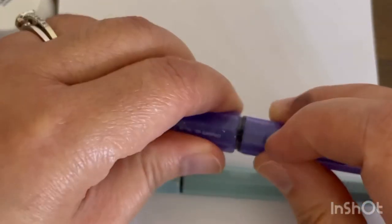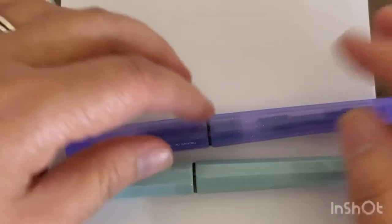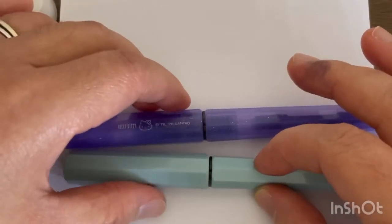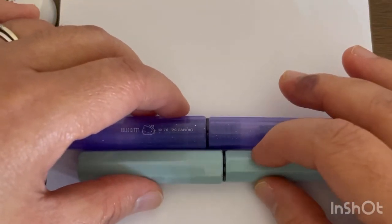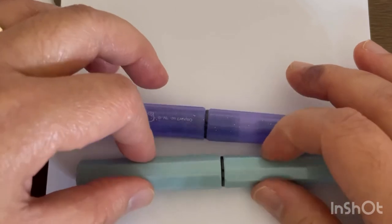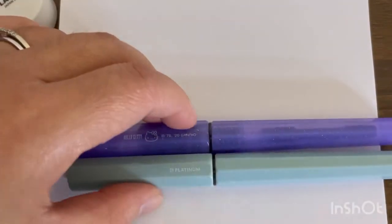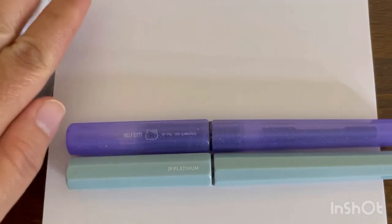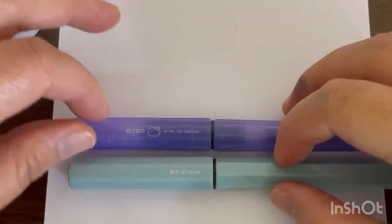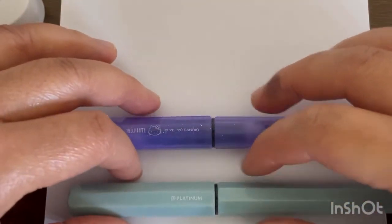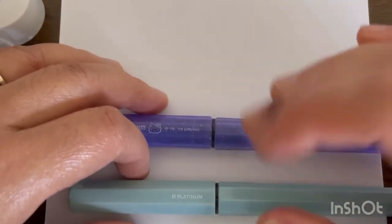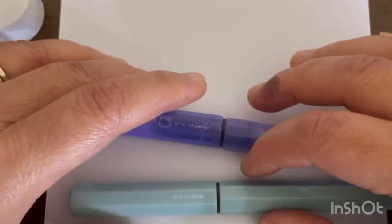I think the Meteor pens only come in fine nibs, and you know how Japanese nibs are. When you say fine, that nib would write more like an extra fine. Another good thing that I like about this pen is that even though it writes fine or extra fine, I would say the nib is not scratchy at all. It writes smoothly.